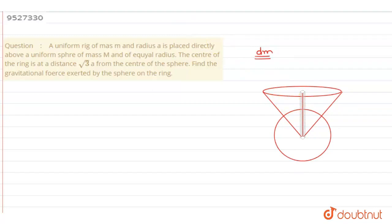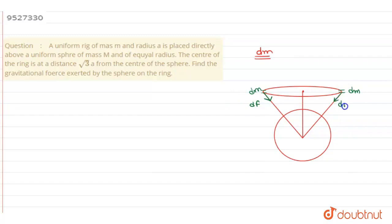What will be the direction of the force? Here I consider dm and here I consider dm. The force here will be in this direction, df, and here the force will be in this direction, df. And how much is this angle? These two lines are also connected. This is the diameter. This angle is theta, and this angle is also theta. The radius is the same — as given in the question.